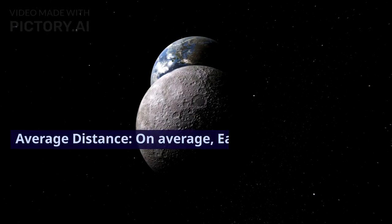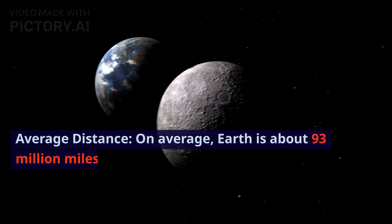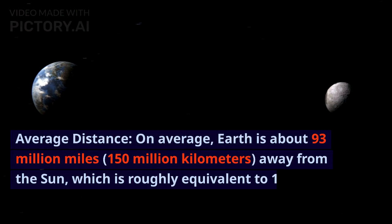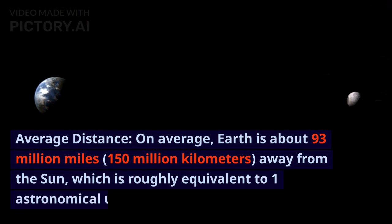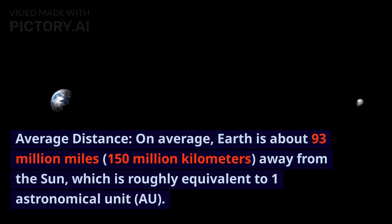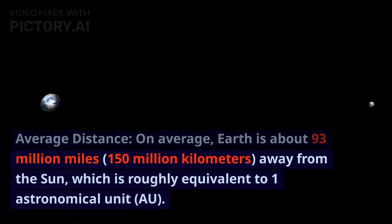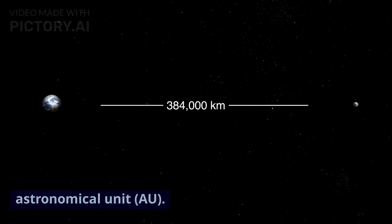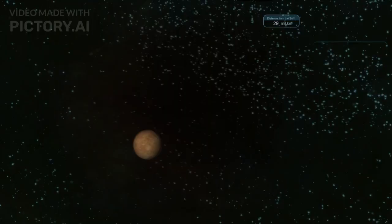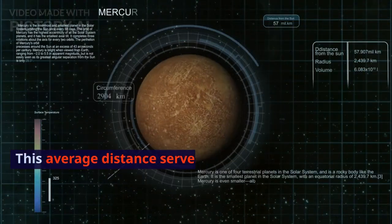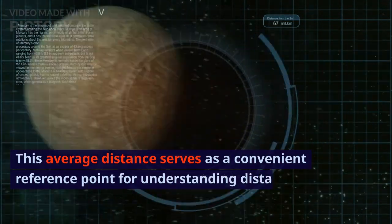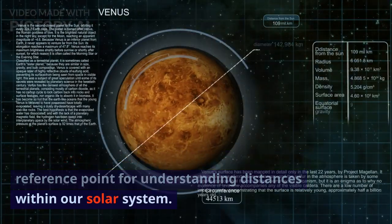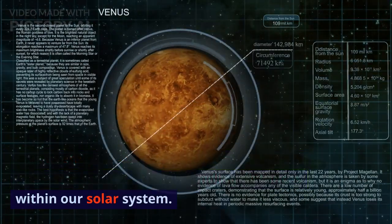On average, Earth is about 93 million miles away from the Sun, which is roughly equivalent to one astronomical unit (AU). This average distance serves as a convenient reference point for understanding distances within our solar system.